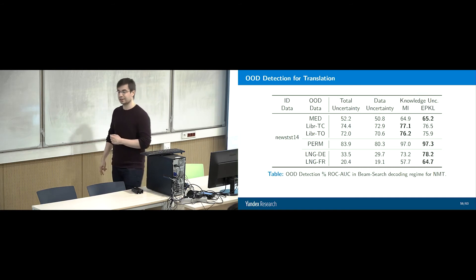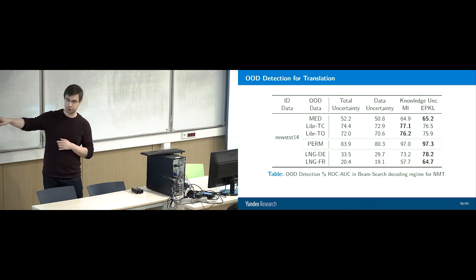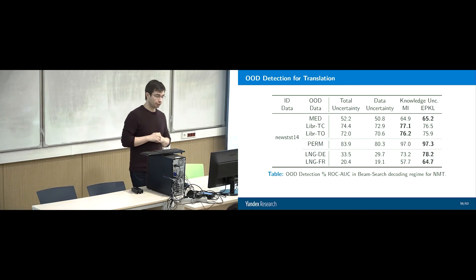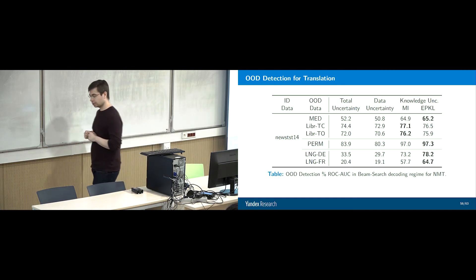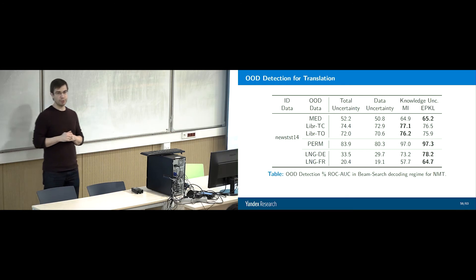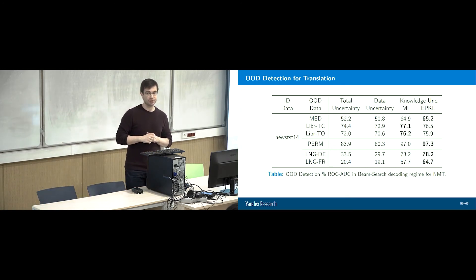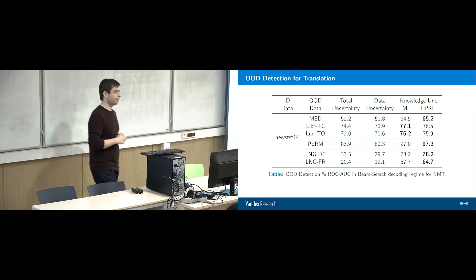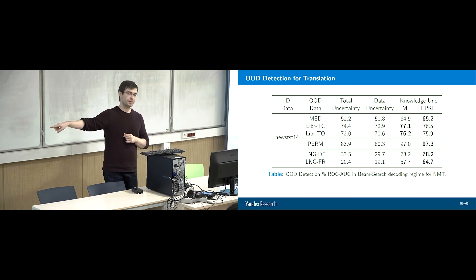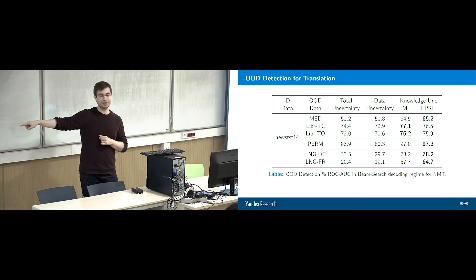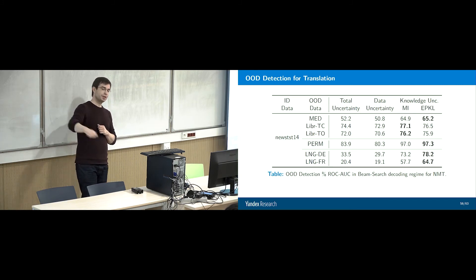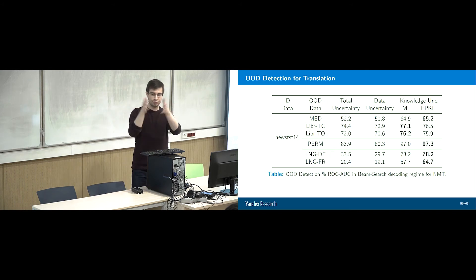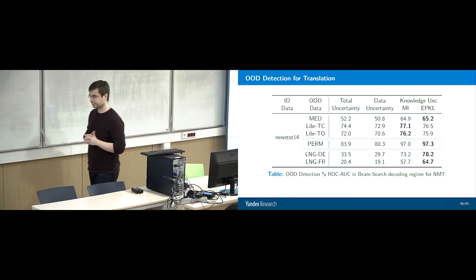The really surprising stuff comes when we feed in different languages. I gave an English-German system German as input rather than English, or French as input. In this situation, models exhibit very confident copy-through: they just copy the input to the output really confidently, more confidently than they decode news test data. Therefore our ROC AUCs are less than 50 — we're more confident in out-of-domain data than in-domain data. We are much more confident in how we copy input to output than in generating a valid hypothesis.